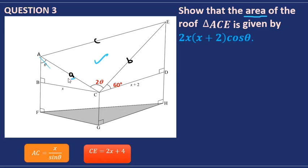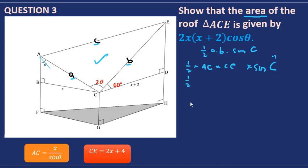Making angle C the included angle, with sides AC and CE, the formula becomes: Area = half times AC times CE times sine of angle C. From question one, AC equals x over sine theta, and from question two, CE equals 2x plus 4. We substitute these in along with angle C equal to 2 theta.